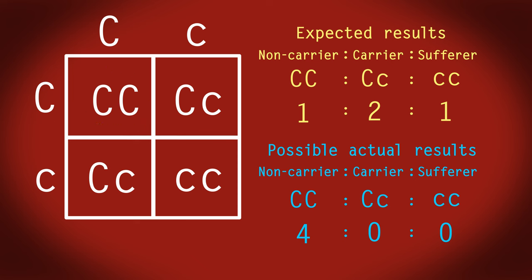Before we finish, maybe some of you have been wondering why we are allowed to just split up the parental genotype into two separate letters. This is because during meiosis, the cell division that produces sperm and egg cells, the chromosomes are separated into two halves.